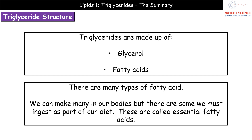If we think first of all about the structure of a triglyceride, we need to know what they're made of, and it's really straightforward. There are two components: glycerol and fatty acids. When it comes to those fatty acids, there are many different fatty acids available to us. Some we can make inside our bodies; others we have to take in as part of our diet because we can't make them - those are referred to as essential fatty acids.